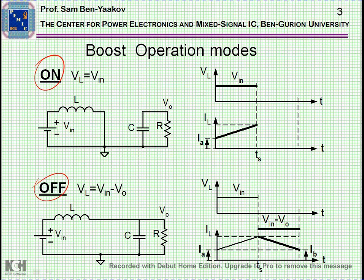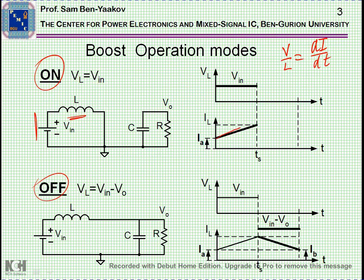During the on time, the inductor is actually connected in parallel to the input voltage. Therefore, there is a constant voltage imposed on it. Since we have the equation that states that dI/dT — the rate of rise of the current — is V over L, and since V is constant and L is constant, the current will go straight line increasing.